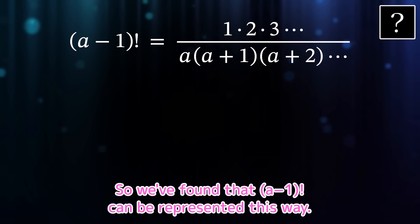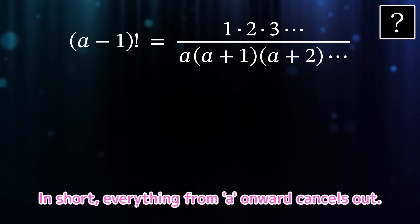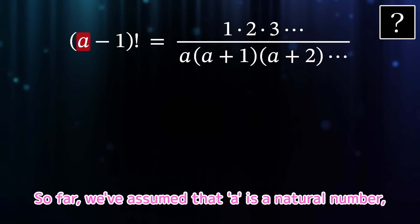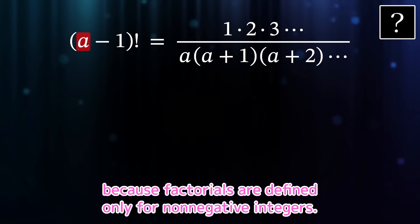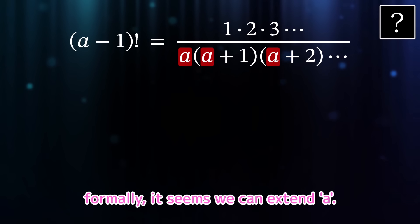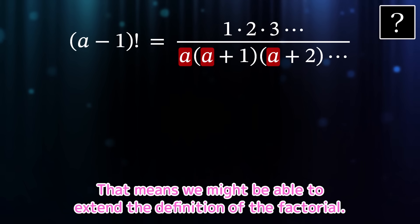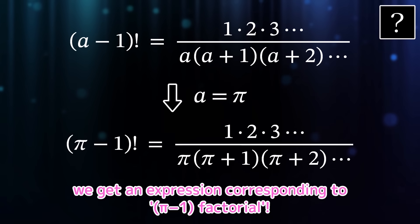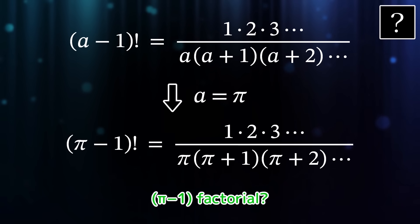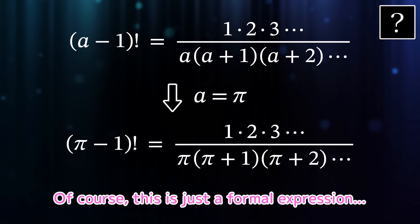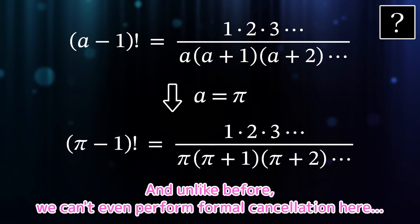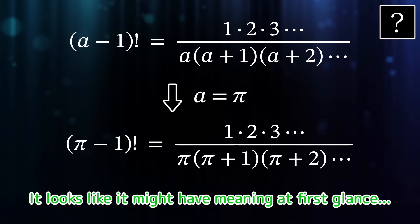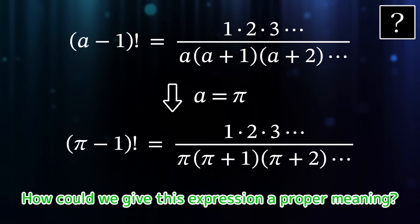That's a beautiful result. So we found that (a-1) factorial can be represented this way — everything from a onward cancels out. We've been ignoring rigor so far, but let's take it one step further. So far we've assumed a is a natural number, because factorials are defined only for non-negative integers. But if you look at the right-hand side, formally it seems we can extend a. That means we might be able to extend the definition of the factorial. For example, if we substitute a equals pi, we get an expression corresponding to pi minus 1 factorial. This is just a formal expression — basically a symbolic fraction-like form. And unlike before, we can't even perform formal cancellation here, because the numbers in the numerator and denominator are all different. It looks like it might have meaning at first glance, but something feels off.